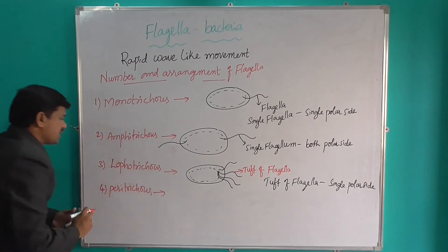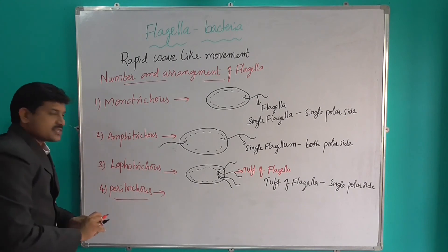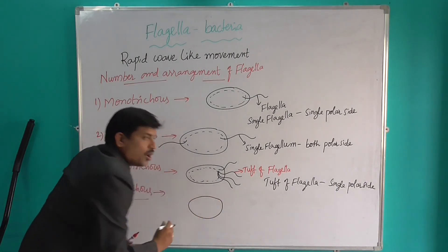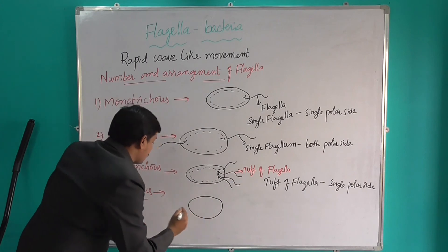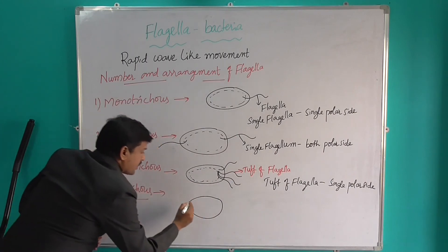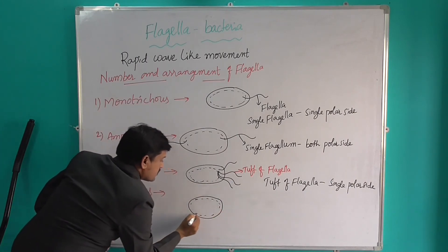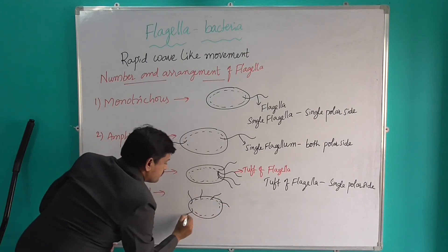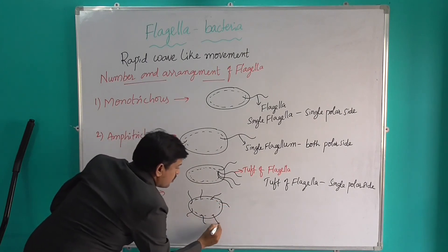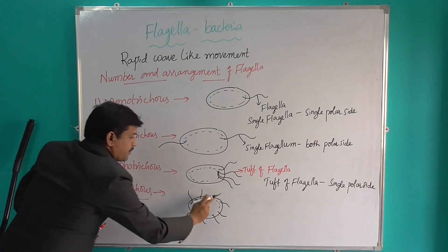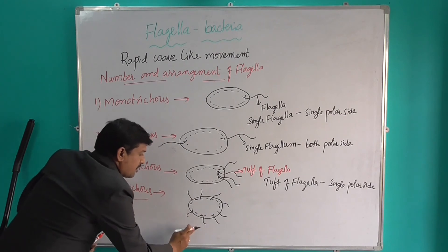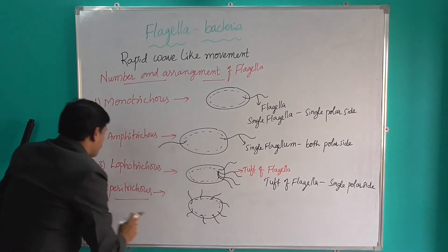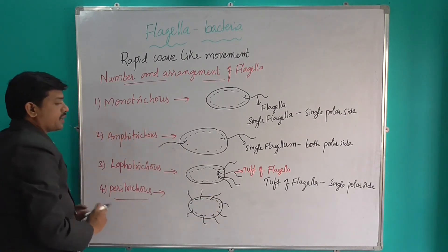The last type is peritrichous. What is meant by peritrichous? The flagella which are distributed over the entire cell is called as peritrichous.